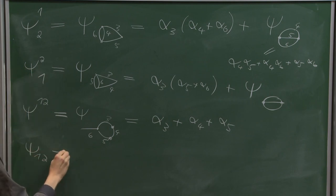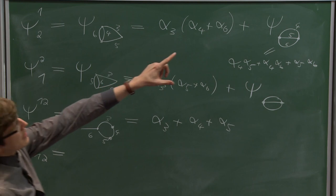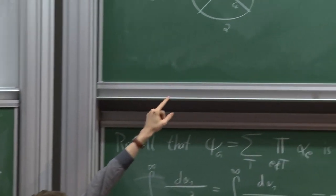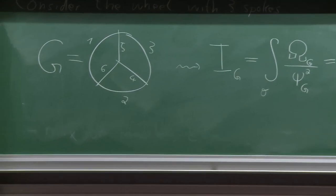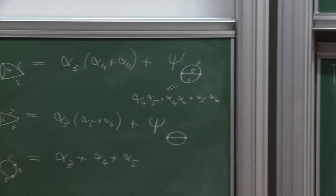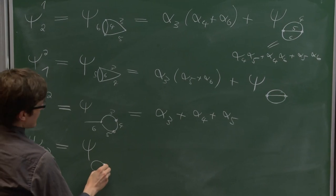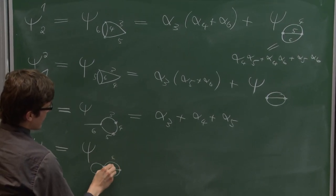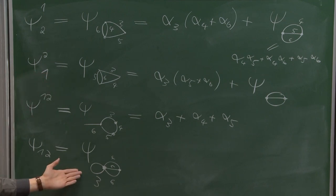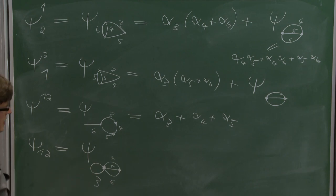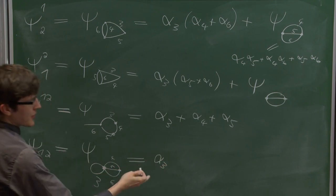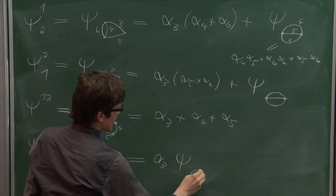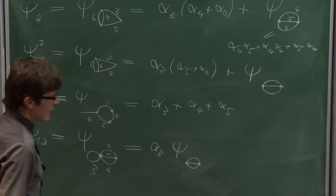When we set alpha_1 and alpha_2 to zero by contracting both, edge 3 becomes a self-loop. No spanning tree can contain edge 3 because that would create a loop, so alpha_3 multiplies this polynomial as a divisor. What remains is again the sunrise polynomial. So we observe a miracle: this denominator is actually a complete square — it's (alpha_3 · alpha_6 + psi_sunrise)^2.